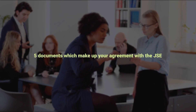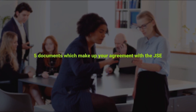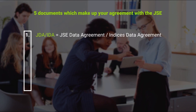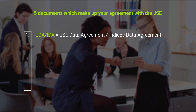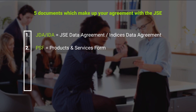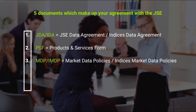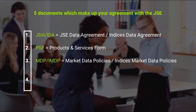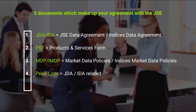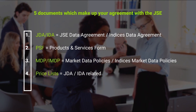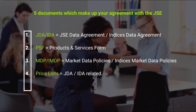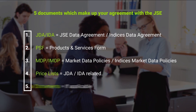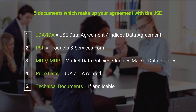There are five documents which make up your agreement with the JSE: the JSE data agreement or indices data agreement, the product and services form, the market data policies or the indices market data policies, the JDA (JSE data agreement) or IDA (indices data agreement) as well as related price lists, and finally there might be technical documents if applicable.